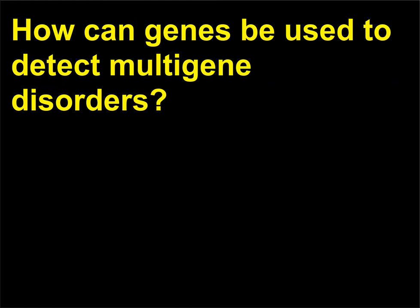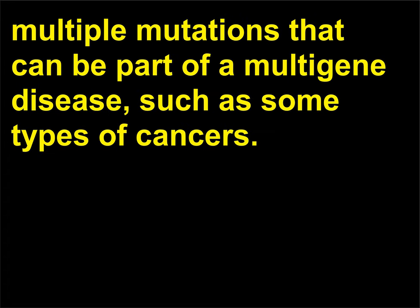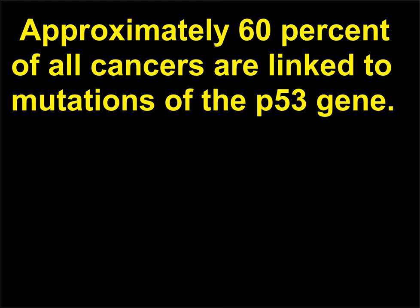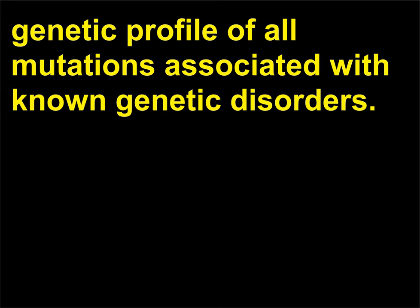How can genes be used to detect multi-gene disorders? DNA chips and microarray technology can be used as a diagnostic tool when searching for multiple mutations that can be part of a multi-gene disease, such as some types of cancers. DNA chip technology is now being used to screen for mutations in the p53 gene — approximately 60% of all cancers are linked to mutations of the p53 gene. Eventually, these methods will be used to collectively generate an individual genetic profile of all mutations associated with known genetic disorders.